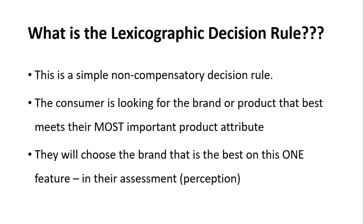Now to explain what the lexicographic rule is — it's probably the easiest rule out of the decision rules in the consumer behavior list. It's a very simple rule. We're simply looking for the brand or product that best meets the consumer's most important attribute. So they pick: what is the most important thing to me? What do I really want out of this? Forget about the five or six attributes on the previous table — what is the most important? Simply pick the best brand.